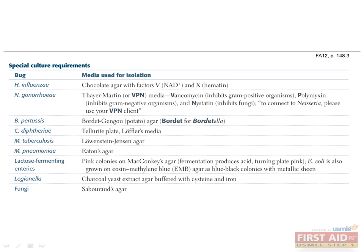Media can be selective, meaning it contains antibiotics to prevent growth of contaminating microorganisms, such as the Thayer-Martin VPN media, which contains vancomycin, polymyxin, and nystatin to inhibit growth of organisms other than Neisseria gonorrhea. Media can also be differential, meaning it induces only the bacteria you are interested in to change color so you can distinguish them from everything else. An example of this is MacConkey's agar, which will only turn pink in the presence of lactose-fermenting bugs, such as E. coli.